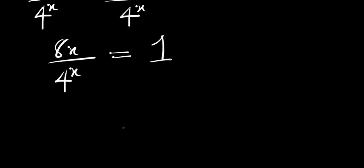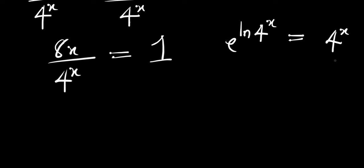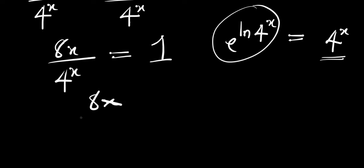At this point, the next thing we are going to do is make use of this function. Remember if you have e raised to the power of ln, that gives 1. So if you have e raised to the power of ln(4^x), this is the same thing as 4^x. So we are going to replace 4^x with that, giving us 8^x divided by e^(ln(4^x)) equals 1.